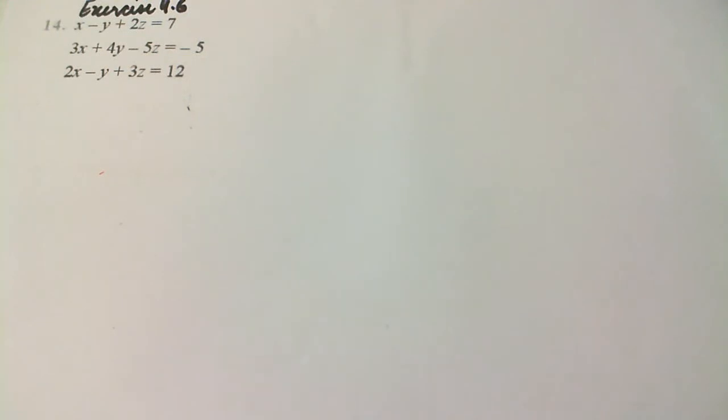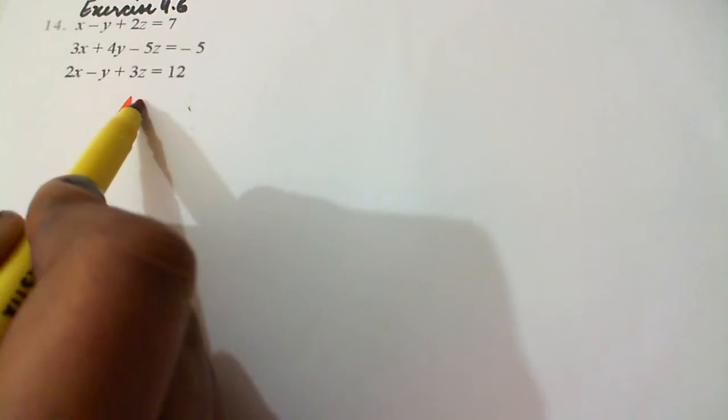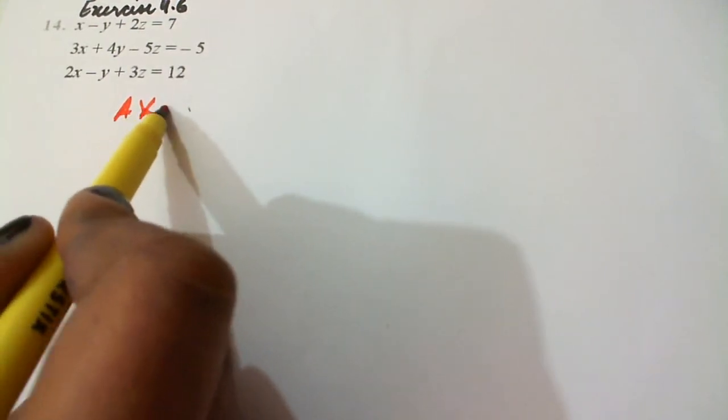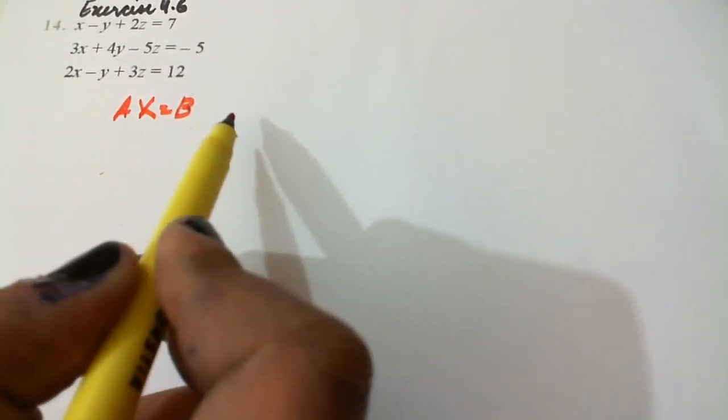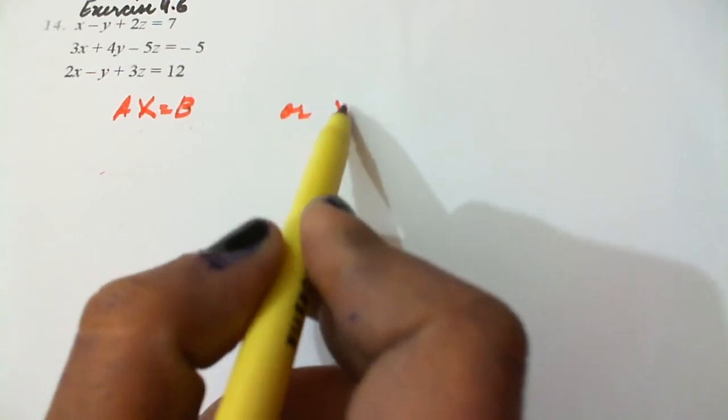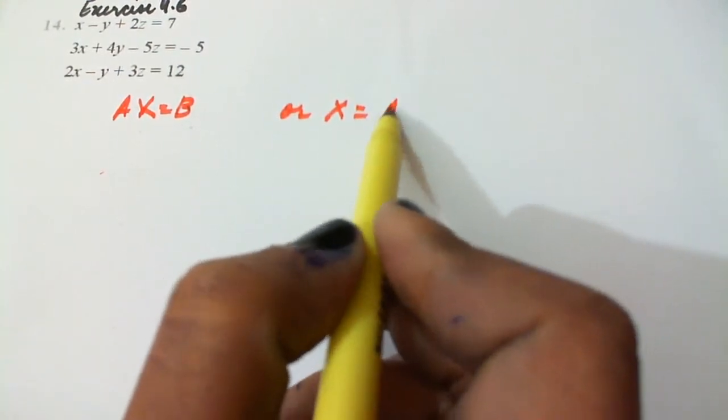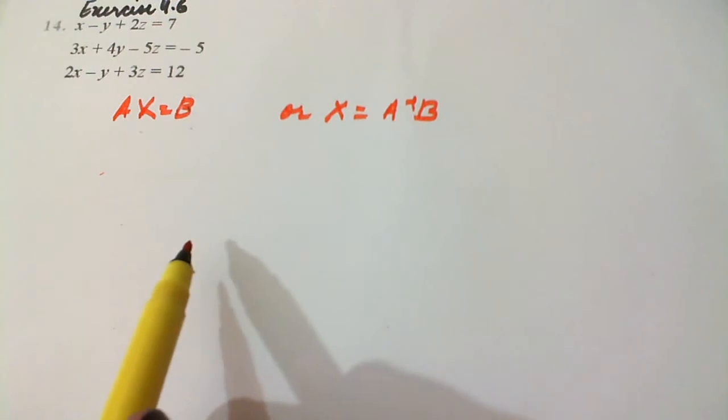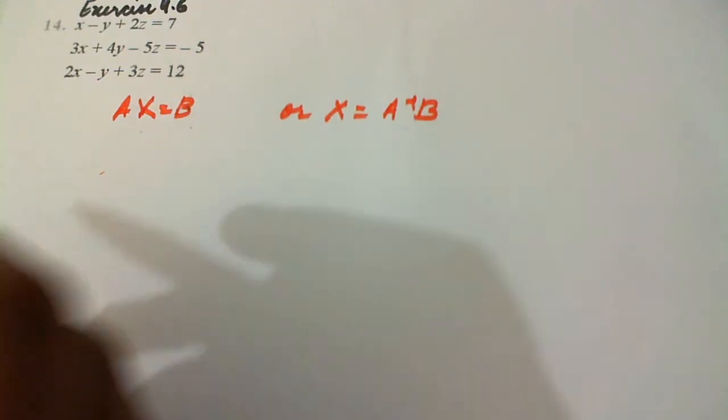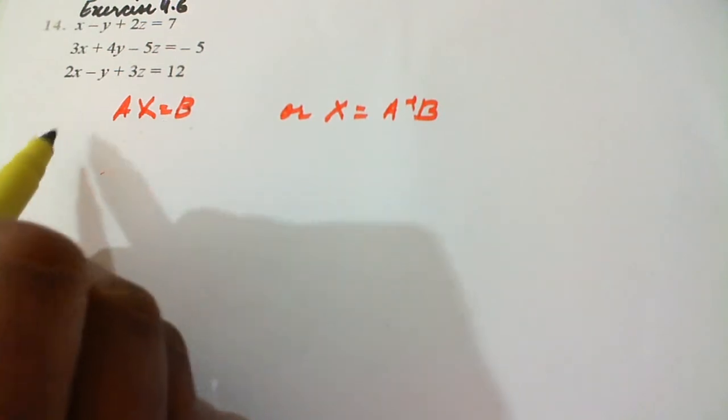Exercise 4.6 question number 14, we have to solve the system of equations using matrix method. So it is Ax equals to B, or x equals to A inverse B.